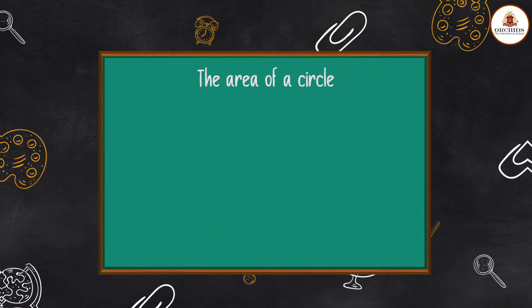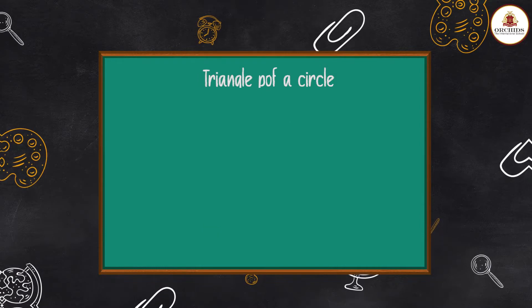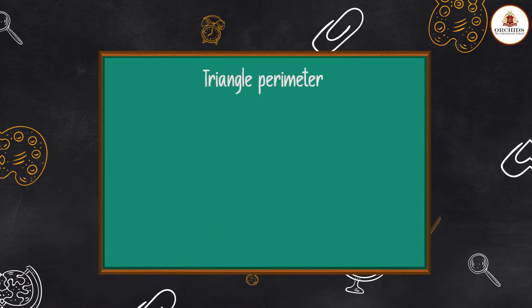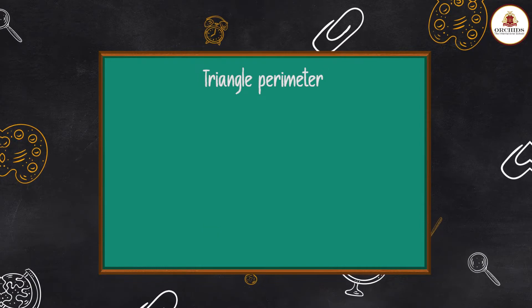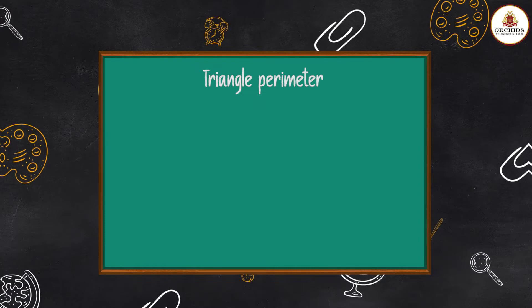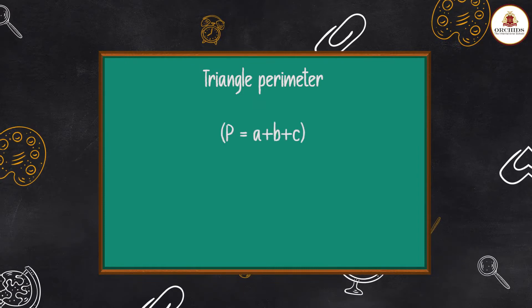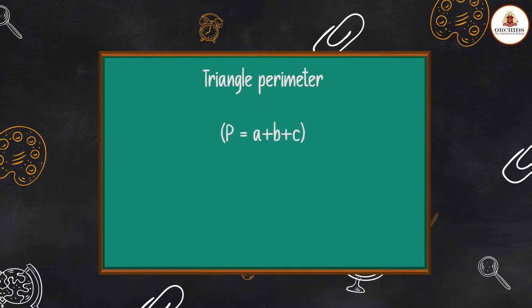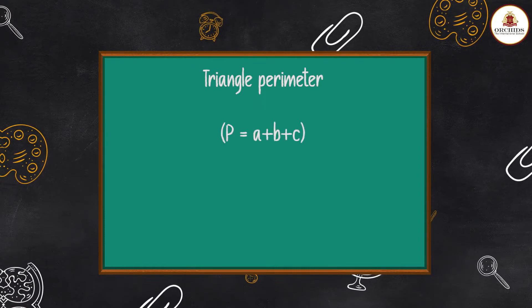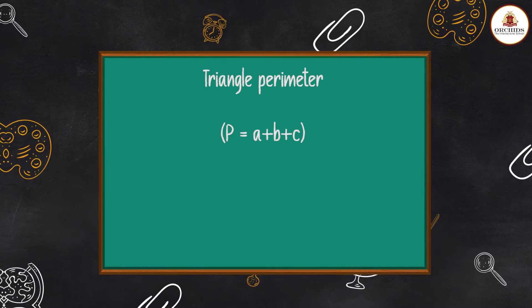For a triangle, the perimeter is very easy — just add the length of all three sides: P = a + b + c.